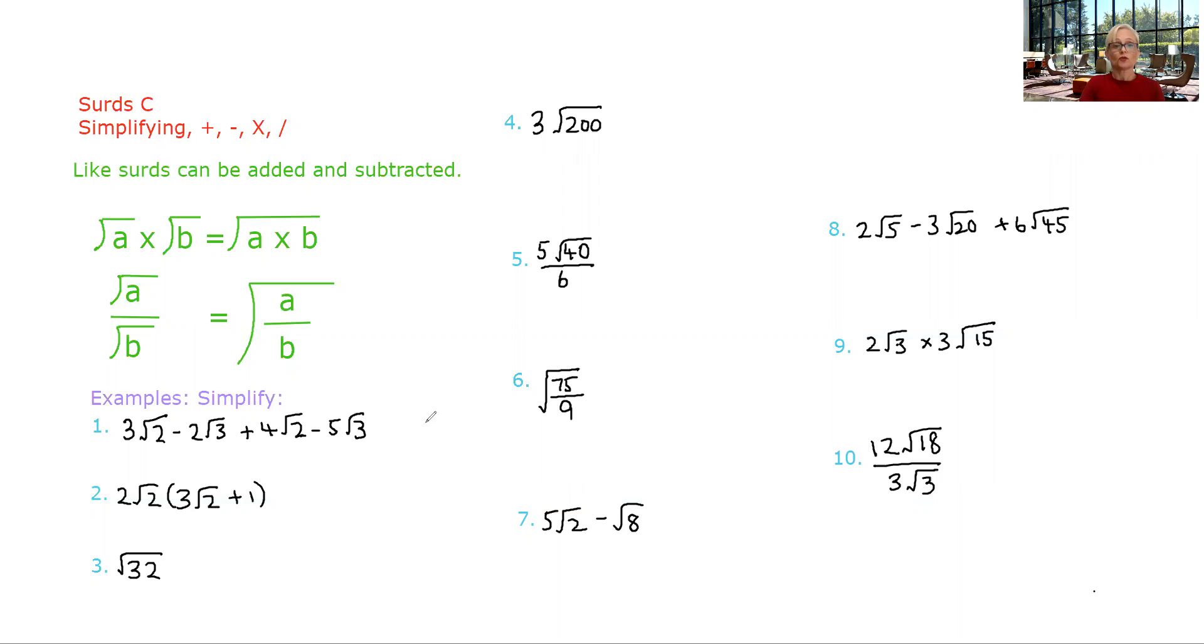You can only add or subtract like surds, just like with your algebra, you can only add or subtract like terms. Let's have a look at this example here. We've got 3 root 2 plus 4 root 2, so we've got 7 root 2 minus 2 root 3 minus 5 root 3 is minus 7 root 3. So that was basically algebra that we did there. We were adding up the like surds.